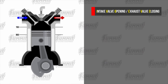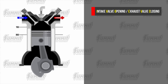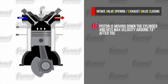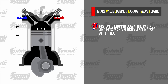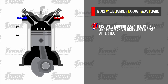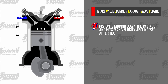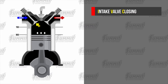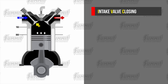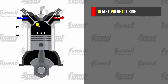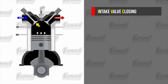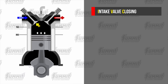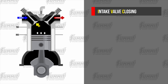Next, let's talk about the period right after overlap on the intake stroke. The intake valve is open and the piston is moving down the cylinder, hitting max velocity around 73 degrees after top dead center. At the end of the intake stroke, the piston is at bottom dead center and starts to move upwards. Finally, we come to intake valve closing at the beginning of the compression stroke. After bottom dead center on the compression stroke, pressure won't start building until the intake valve is completely closed.